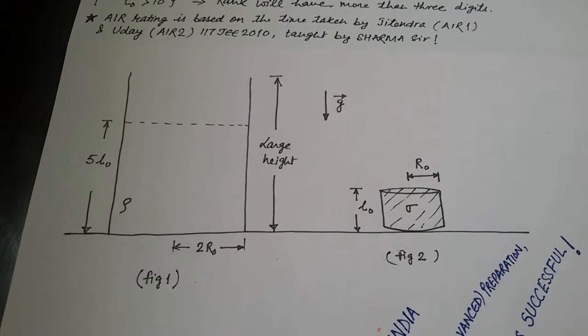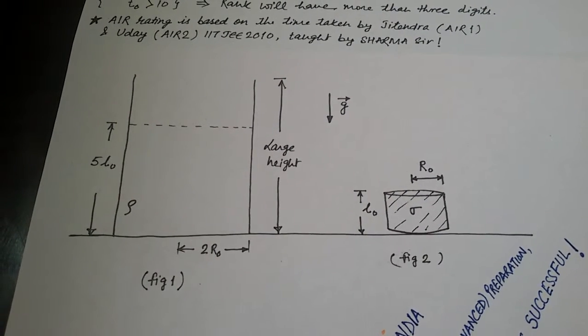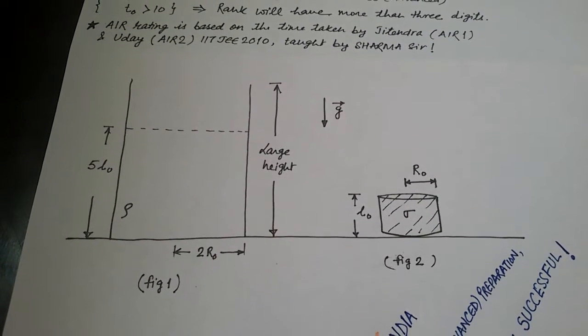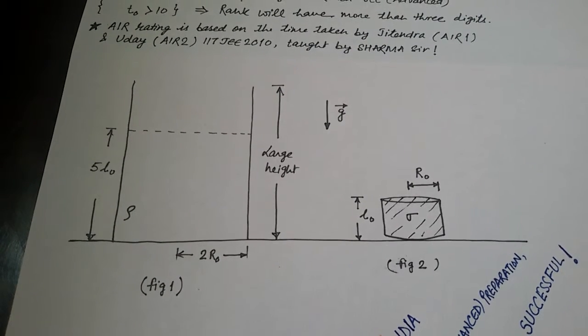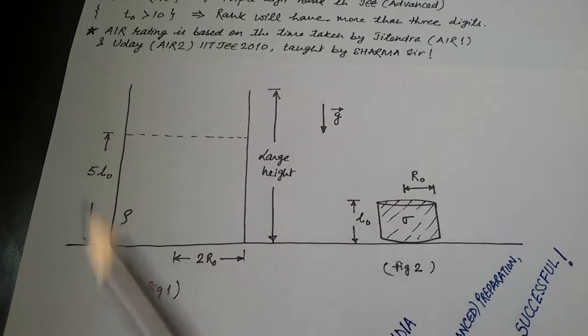Figure 1 shows a cylindrical container of radius 2R0 and large height fixed on ground. So this is the container. Liquid having density rho is filled in the container up to height 5L0.